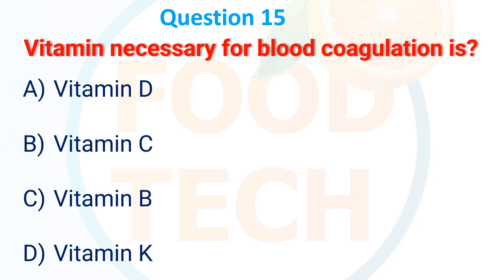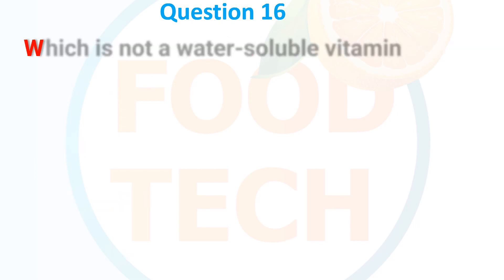Question 15: Vitamin necessary for blood coagulation is — A. Vitamin D, B. Vitamin C, C. Vitamin B, D. Vitamin K. The answer is D. Vitamin K.